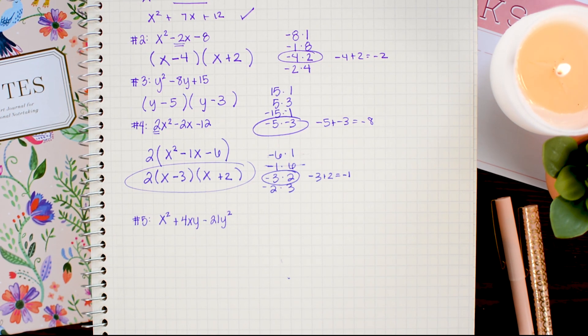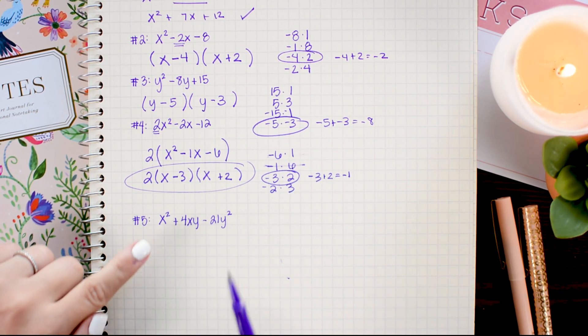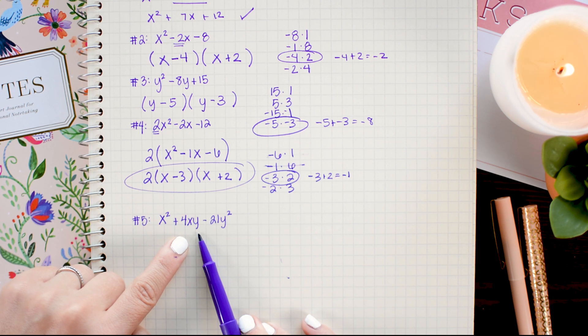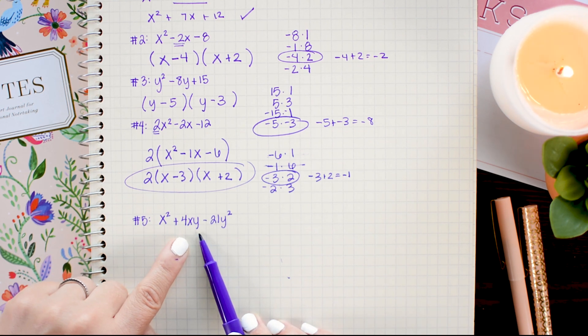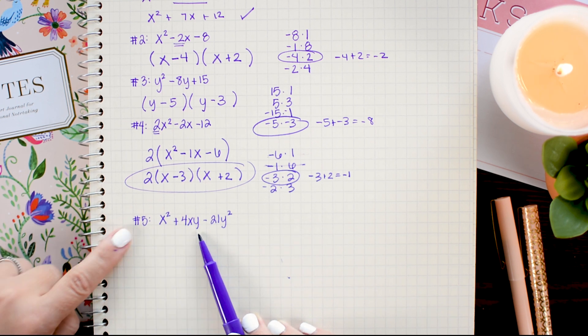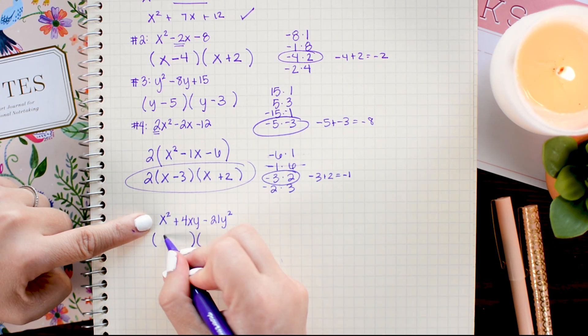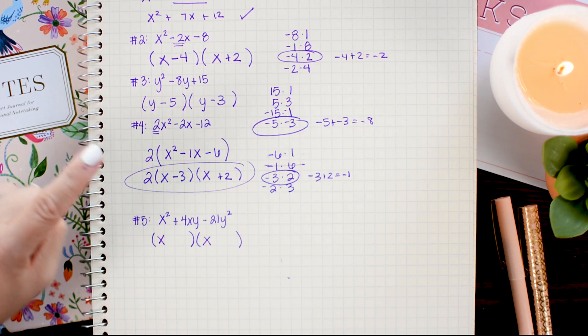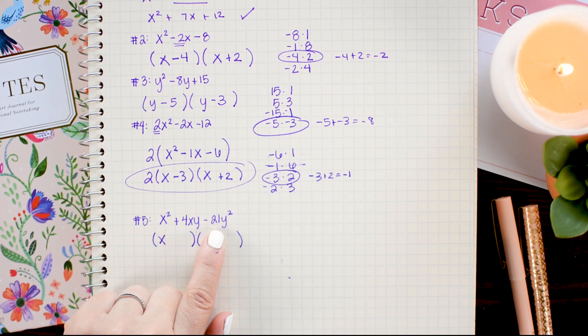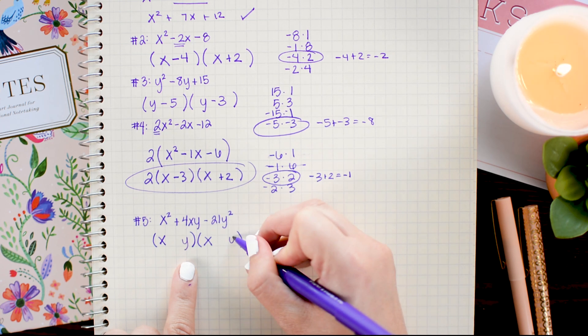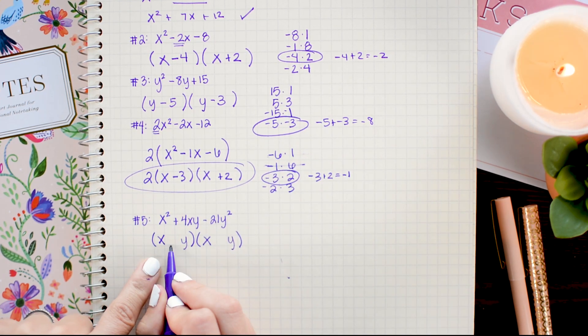For our last example, we have a problem that looks slightly more difficult because it has two variables in it. Now because I have the variable squared on both of the end terms, and I have an x and a y on this middle term, it turns out it's not too hard to factor this. So I want to begin by writing down my parentheses. To get x squared, I'm going to place an x and an x. And then before I start looking for my factors of negative 21 that combine to 4, I'm just going to place a y at the end of both of these.